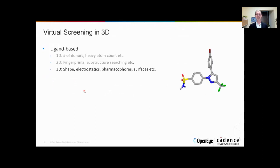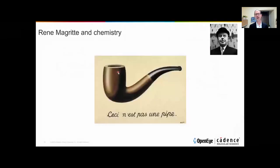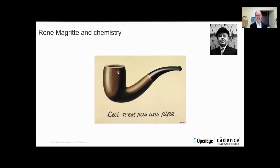Now we're ready to actually do some 3D virtual screening. We're going to start to look at shape, electrostatics, and pharmacophores. But before we do that, I'd like to take a short break from the plots and the charts and the science and talk a little bit about art — particularly early 20th century Belgian surrealism.